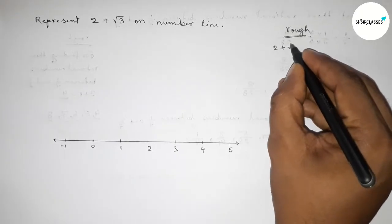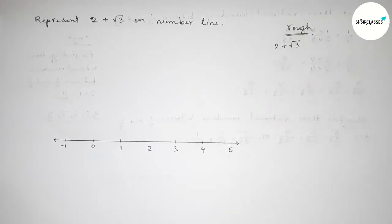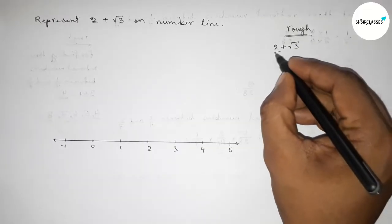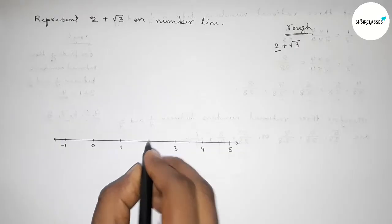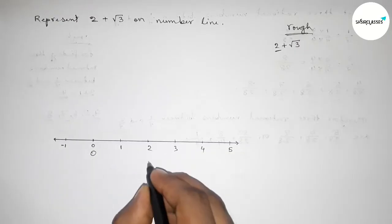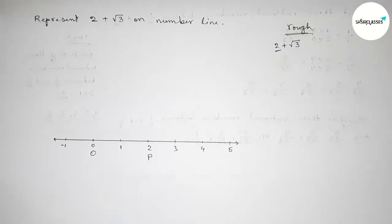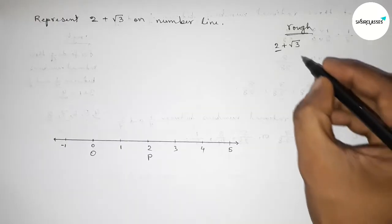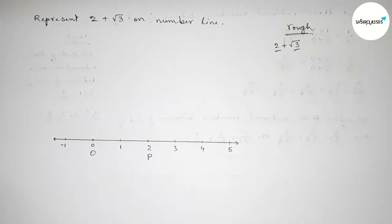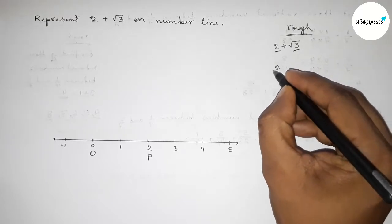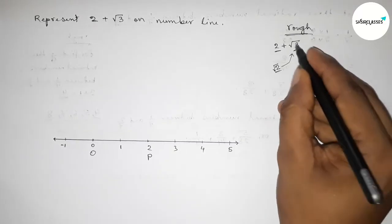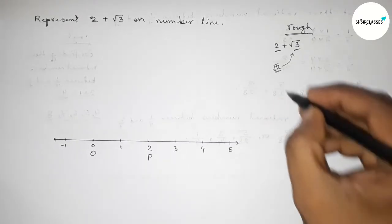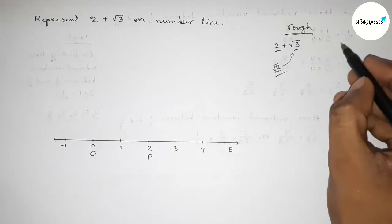Now briefly discussing some important calculations. We have to represent 2 plus root 3 on the number line. Here, 2 units are given — from 0 to 2 this is 2 units — so taking point O and point P here. Now we have to represent root 3, but before that we first need to represent root 2.